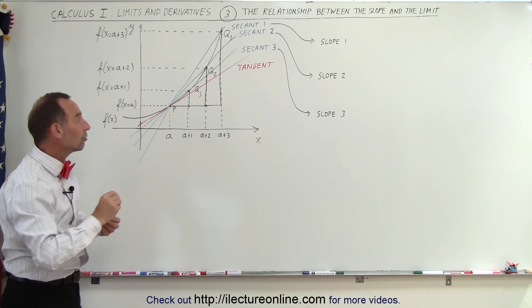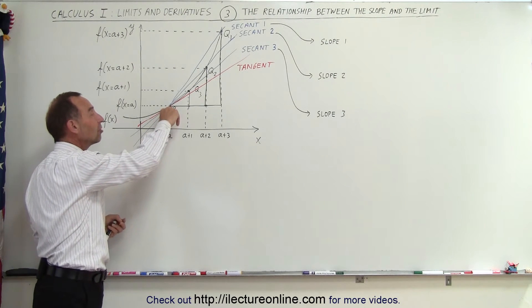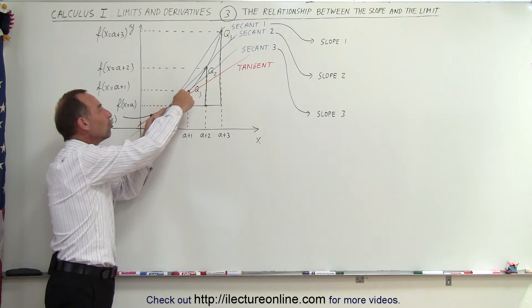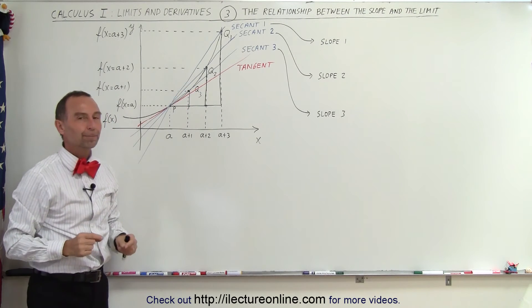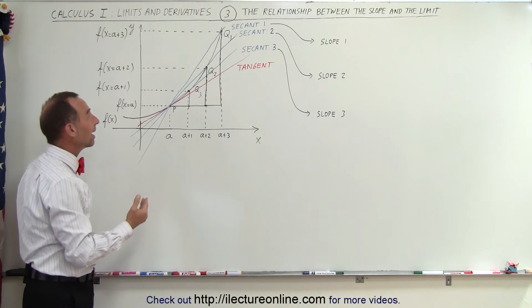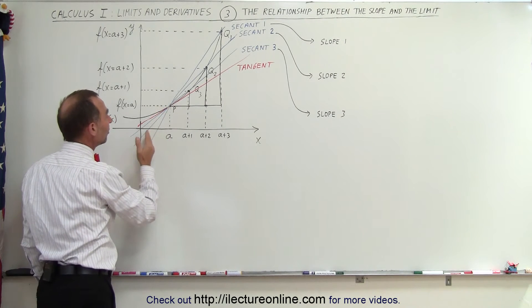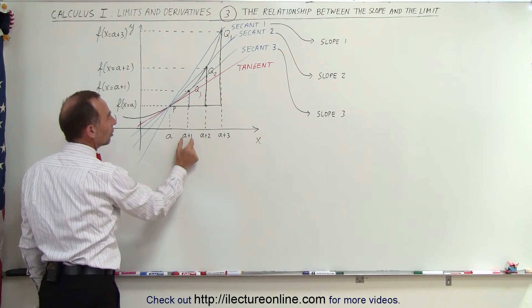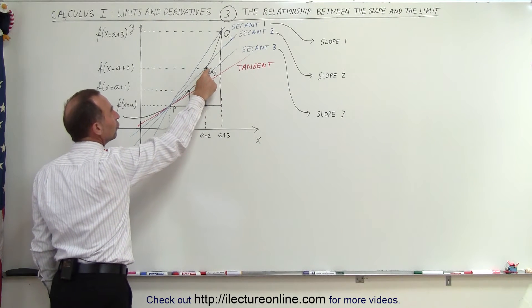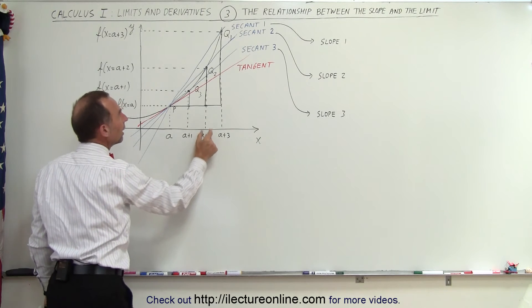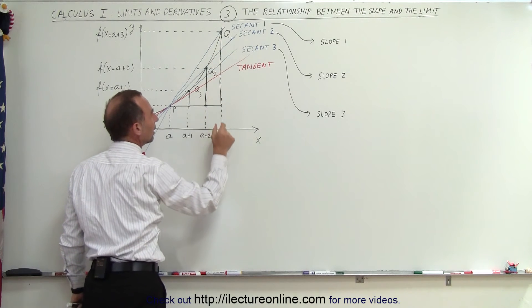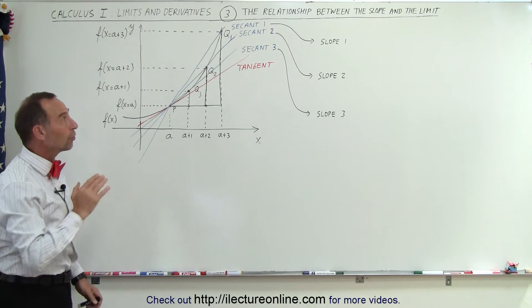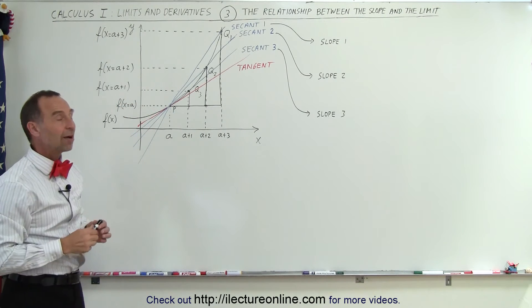Essentially, the derivative of the function will be equal to the slope of the tangent line, which is equal to the slope of the secant line when we bring the two points really close together. To illustrate that, let's say that point P has an x-coordinate equal to A, point Q3 has an x-coordinate A plus 1, point Q2 has an x-coordinate A plus 2, and point Q1 has the x-coordinate A plus 3.